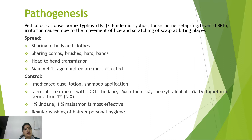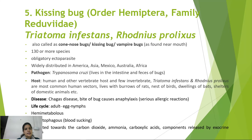Pathogenesis from lice includes pediculosis, louse-borne typhus or epidemic typhus, louse-borne relapsing fever, and irritation from louse movement. Spread occurs by sharing beds, clothes, combs, and brushes, and through head-to-head transmission; children aged 4–14 are mostly affected. Control involves medicated dust, lotion, shampoo, aerosol treatment with DDT, lindane, and malathion — 1% lindane and 1% malathion are most effective — along with regular hair washing and personal hygiene.